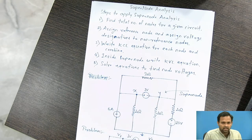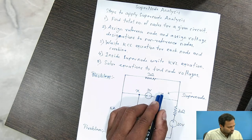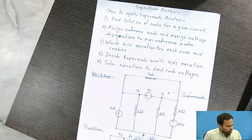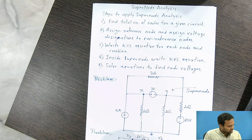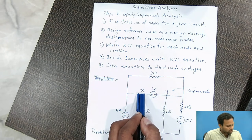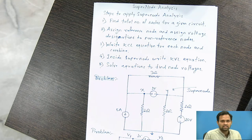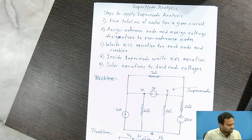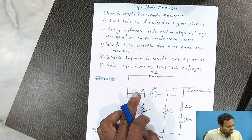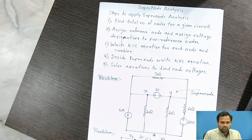As you can see in the given diagram, there are a total of 3 nodes: node X, node Y, and node Z. To find out the unknown voltages at the nodes, we have assigned a reference node or ground node, and we will apply KCL to node X and node Y.